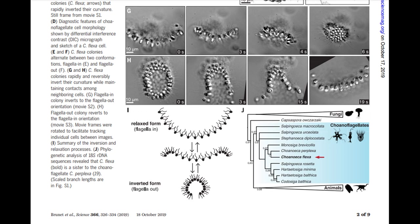It described a new species, Coenoica flexa. This is a choanoflagellate — a member of the clade of protists that are the closest relatives of animals. The cells of this particular species form colonies, which can invert their shape in response to changes in light intensity, from a ball of cells with the flagella on the outside into a cup-shaped form with the flagella on the inside. The former seems optimal for locomotion, while the latter is for feeding. Brunet et al. found that the mechanisms for collective cell contraction are conserved between this choanoflagellate and animals, indicating that the common ancestor of both was also capable of cell contraction even before the evolution of multicellularity.